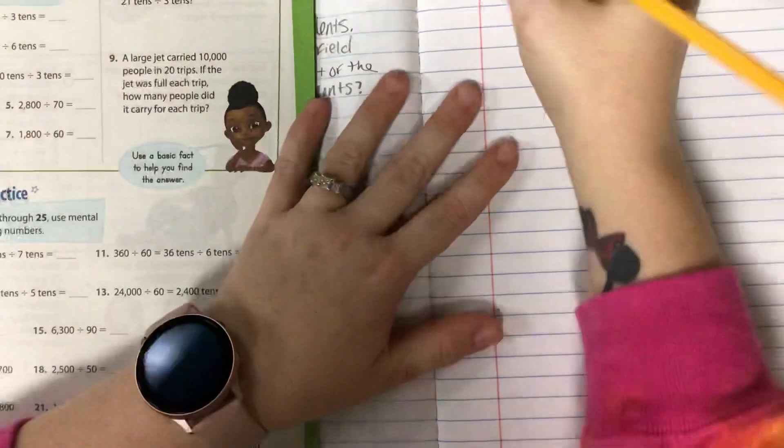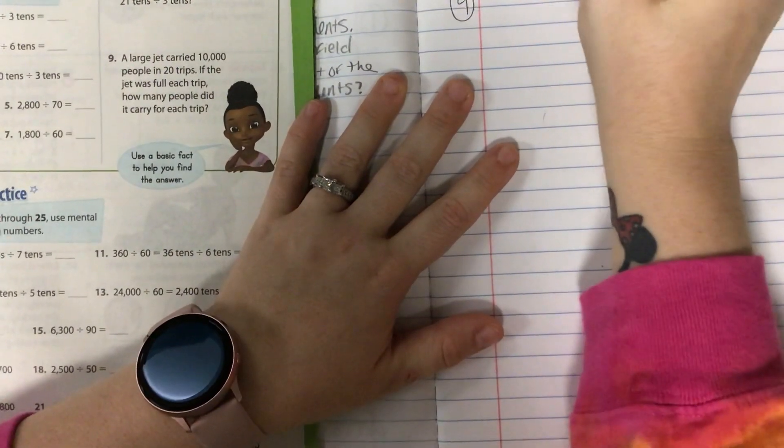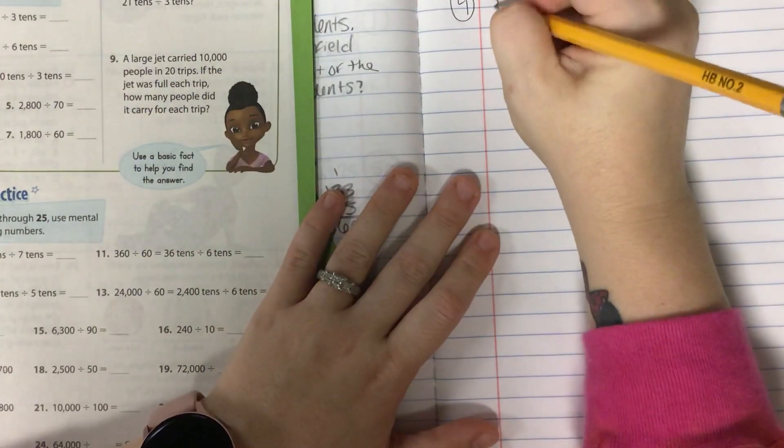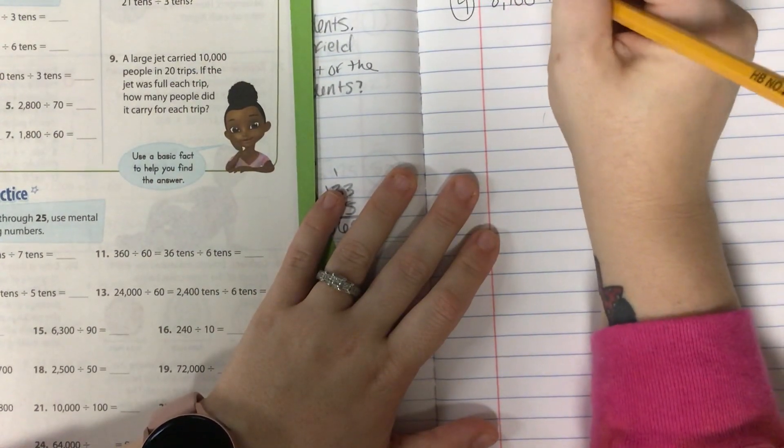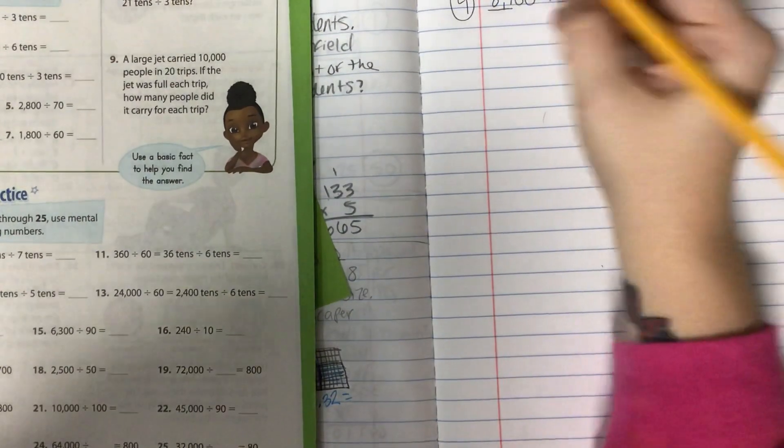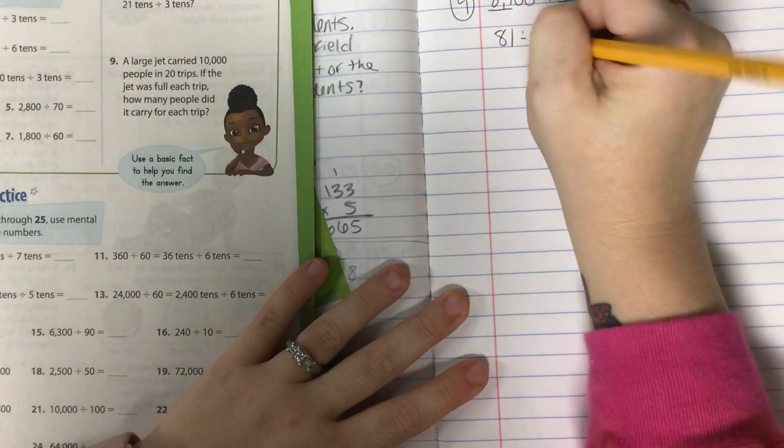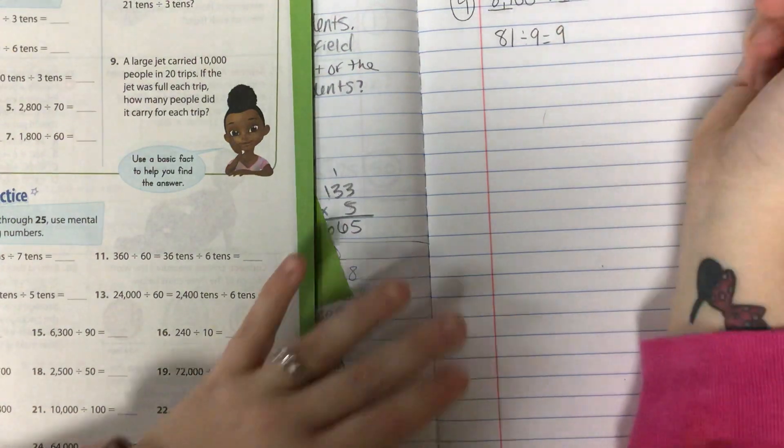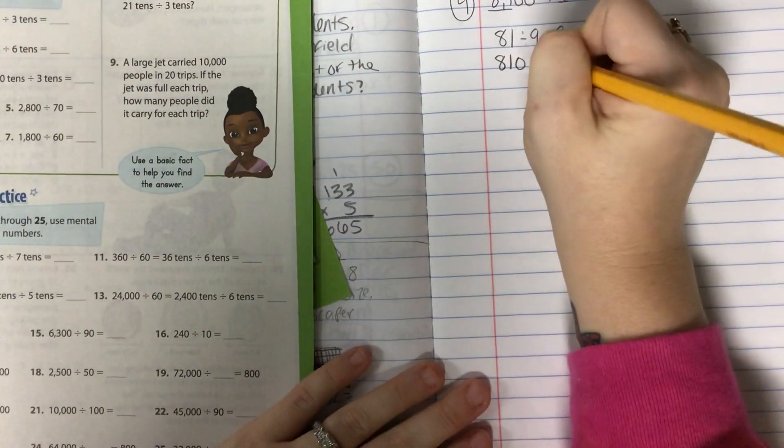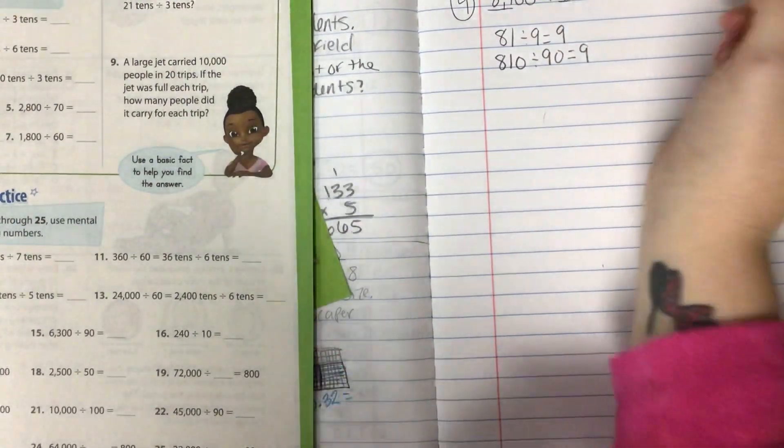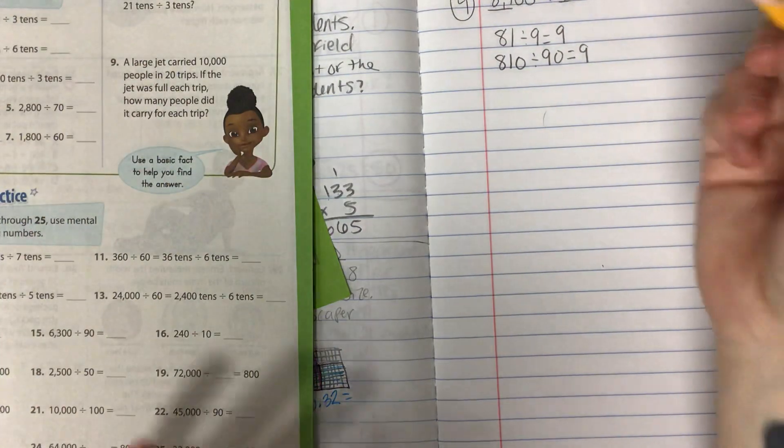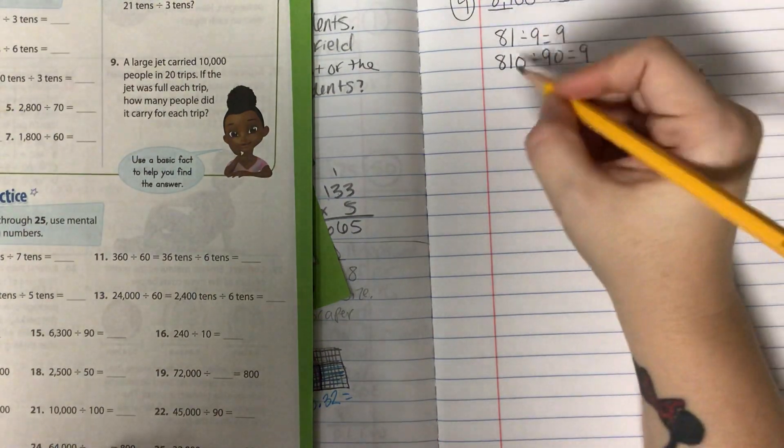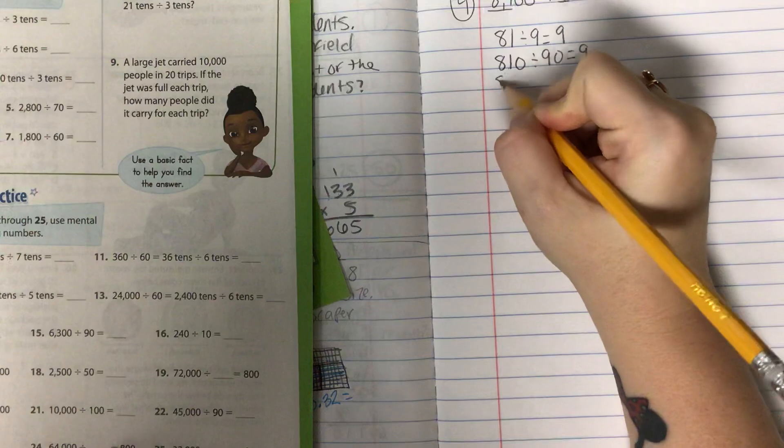We're going to do a couple more examples. Let's start with number 4. This is lesson 4.1. We have 8,100 divided by 90. We're going to take our first number. We have 81 divided by 9 equals, well, what times 9 gives you 81? 9, good. So if we're just adding a 0 to each number, it stays the same because 0s cancel each other out. Once again, I'm going to add a 0 to this one. So I have 8, 1, 0, 0.